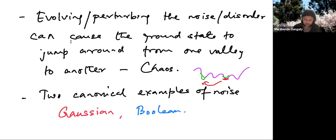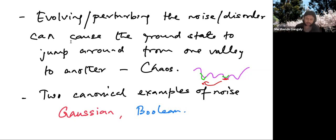The landscape is super intricate. There are many near-ground states and perturbing the noise a little bit makes the ground state shift from one valley to another. The two canonical examples of underlying noise come from Gaussians or Boolean variables.